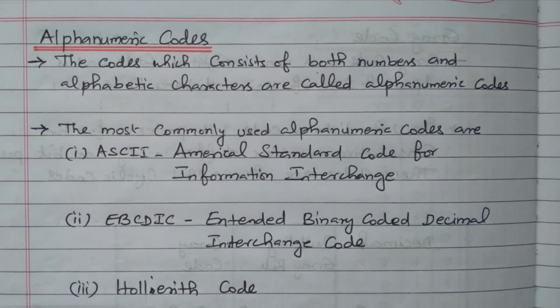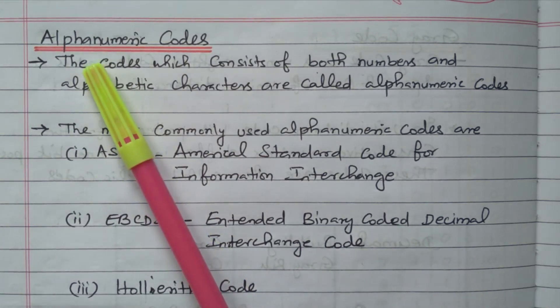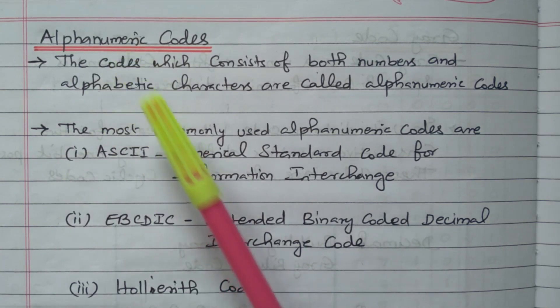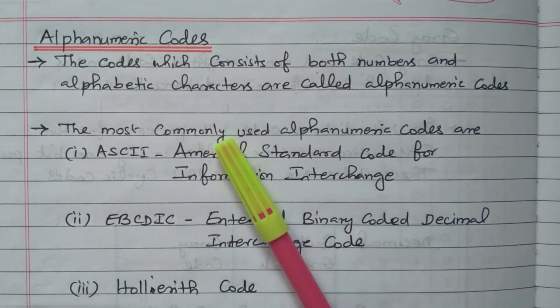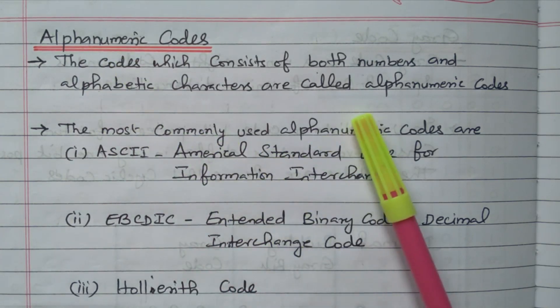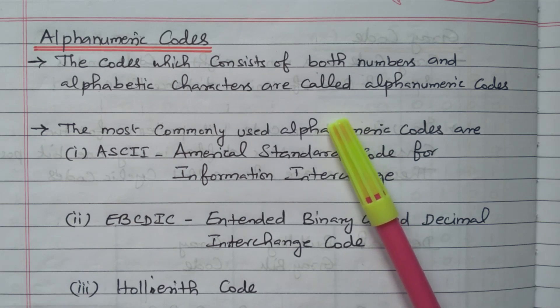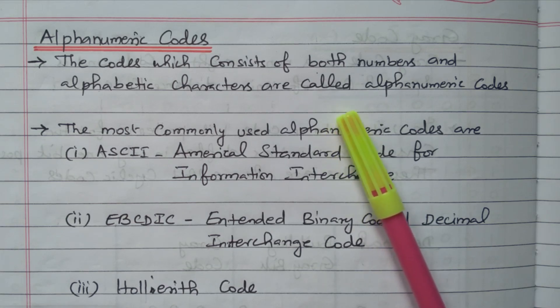Welcome viewers. In this video we will see the alphanumeric code, the type of binary coded decimal. Subscribe this channel for more videos and notifications. Soft copy of this material is available in the drive; link is given in the description box.